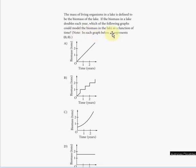In each graph below, O represents (0,0), which is the origin. We're told that the biomass in the lake doubles each year, so as time increases by one year, the biomass will double.